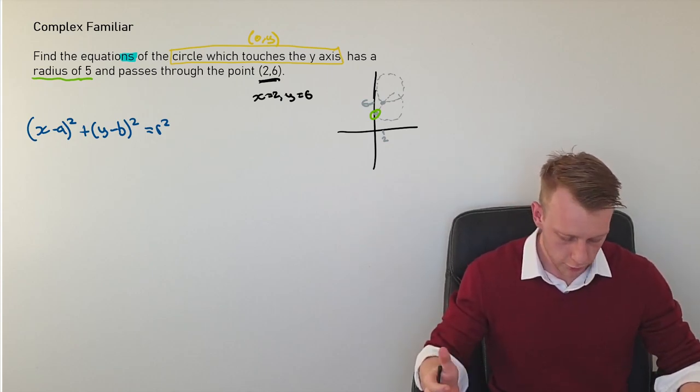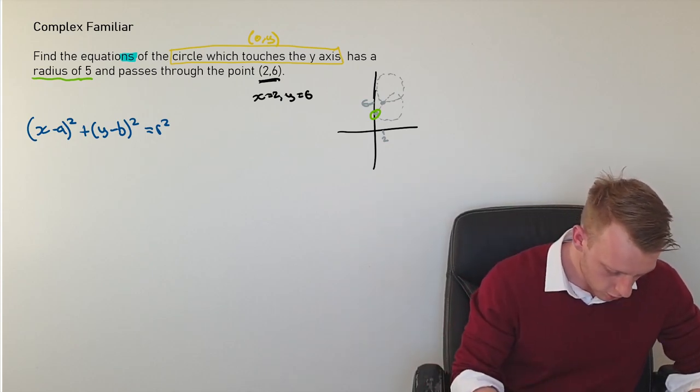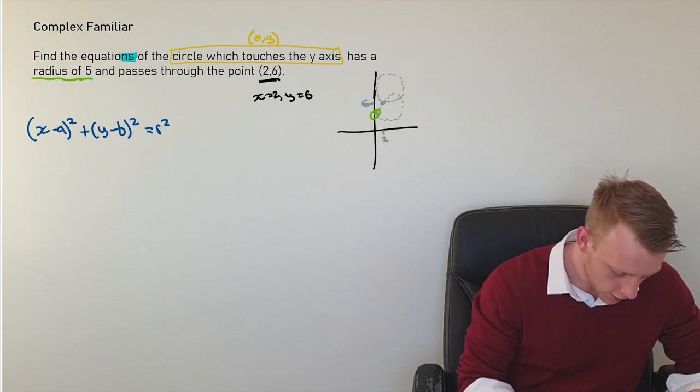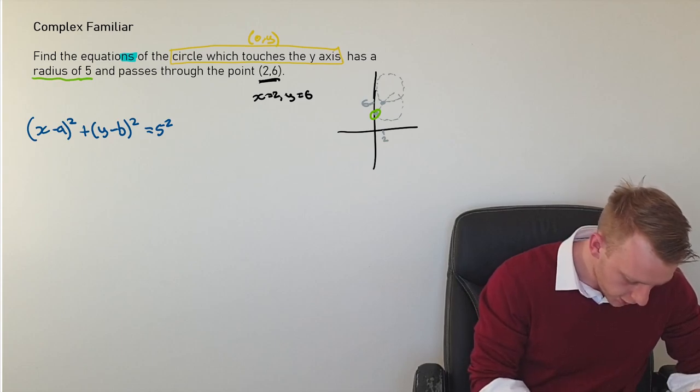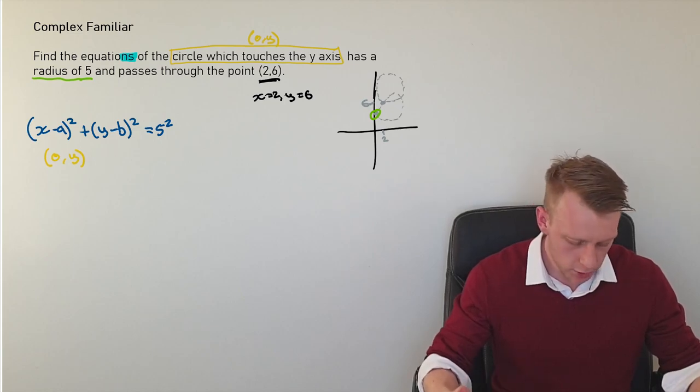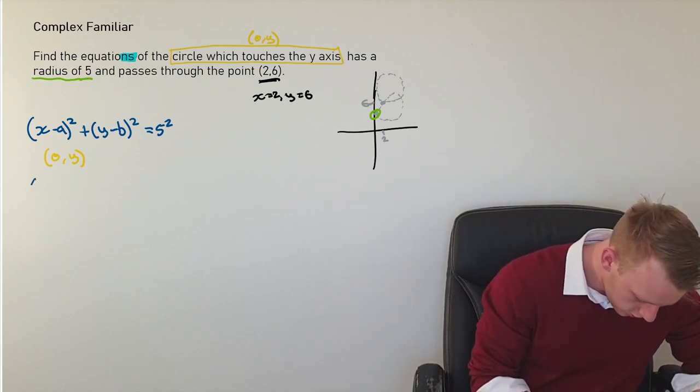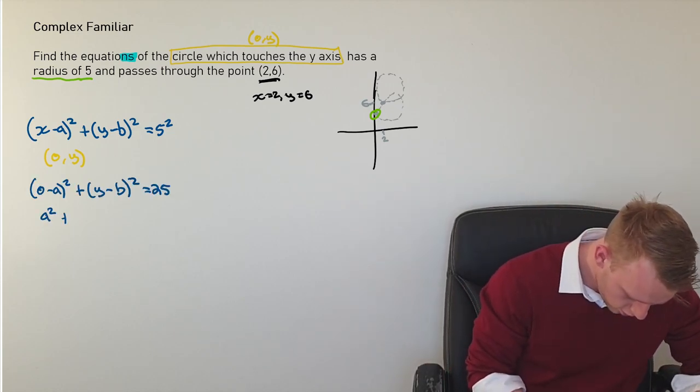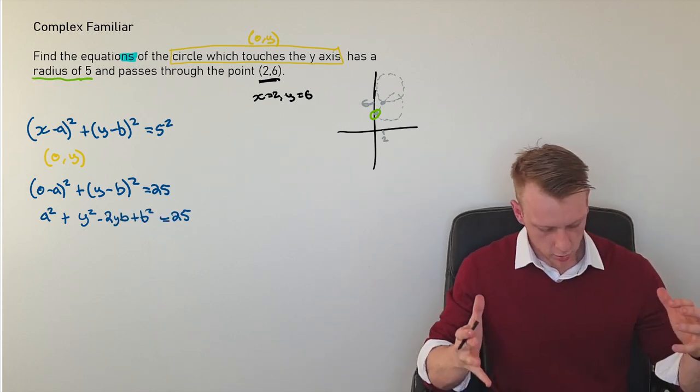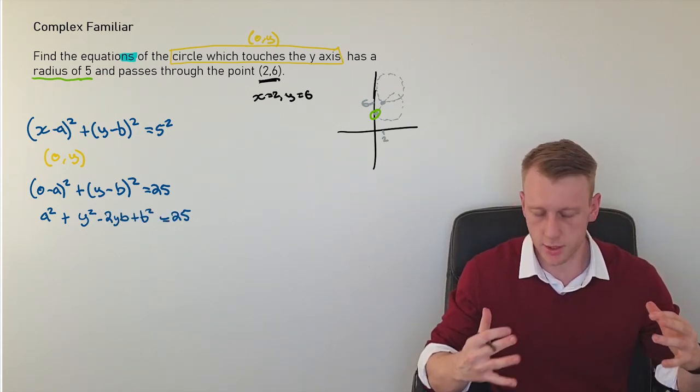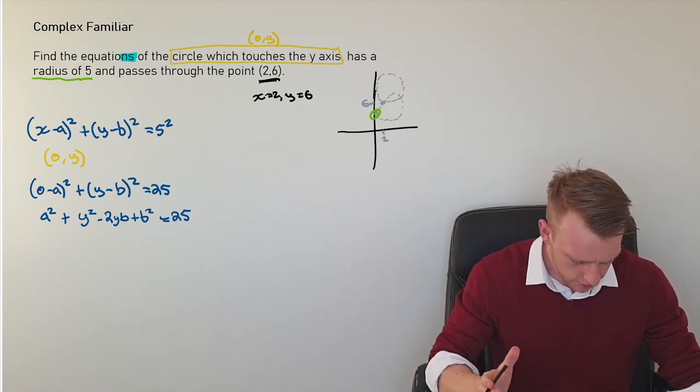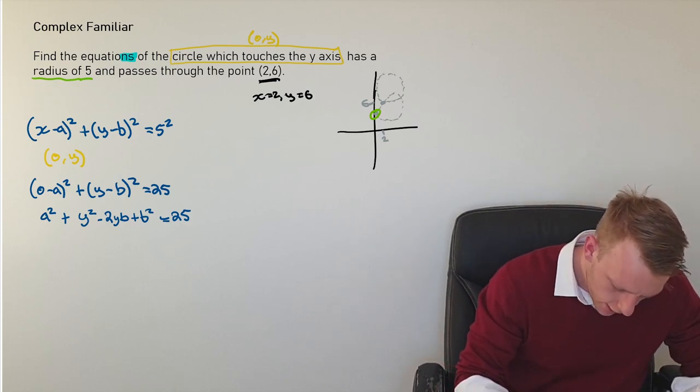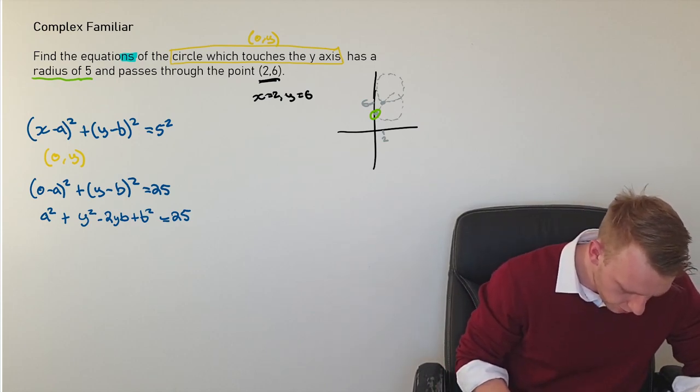So we start off with the general form of a circle, and I'm going to use the fact that I've got the radius to be five. So that's five squared. And I'm just going to use this first bit of information here. I'm going to consider the fact when x is zero, y is y. I'm going to see if I can hunt down some solutions here. So all I've done here is I've just expanded some brackets.